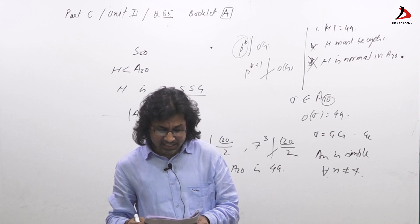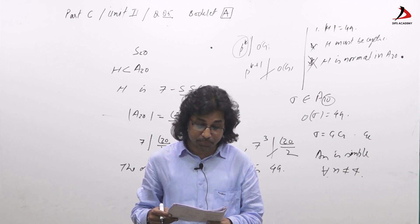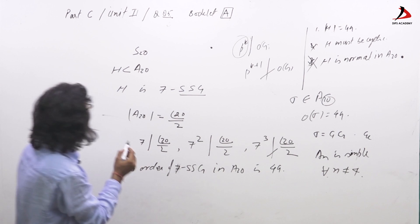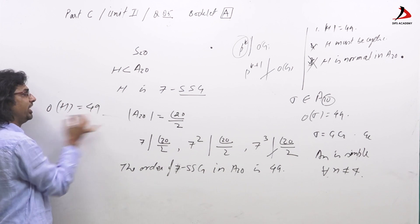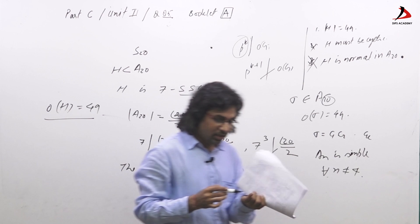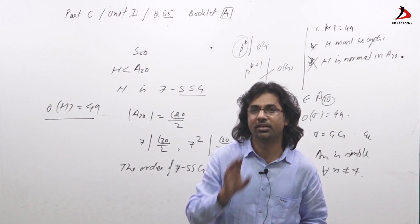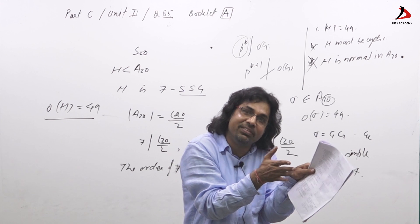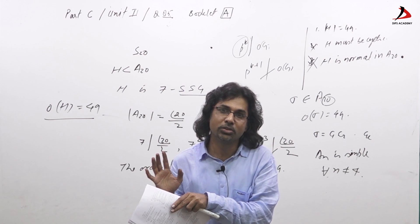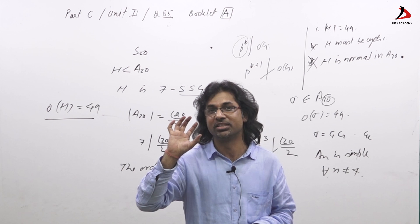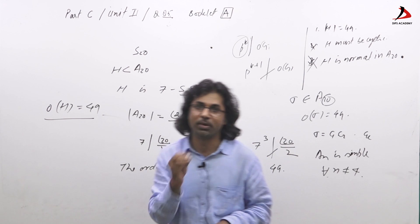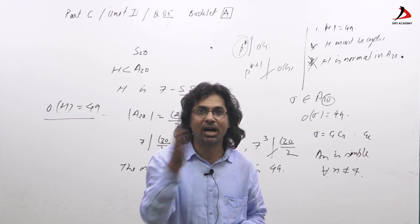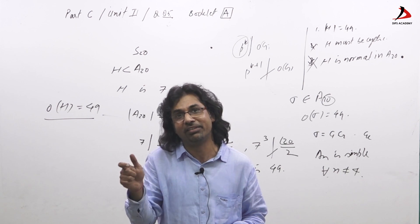Now, fourth: any 7-Sylow subgroup of S_20 is a subset of A_20. Now see, this is very interesting. Order of H is 49. We know a subgroup of S_n, any subgroup of S_n, will contain either exactly half even and half odd permutations or all even permutations. This fundamental property of subgroup of S_n: the subgroups of S_n either have half even, half odd, or all are even.